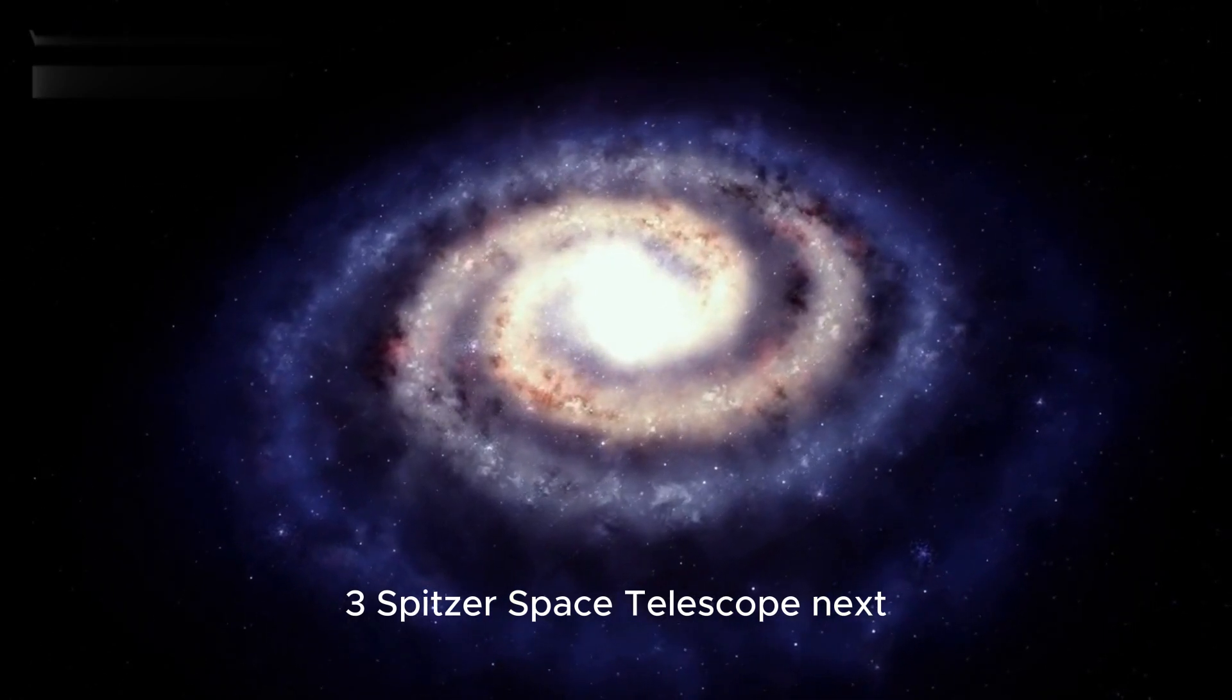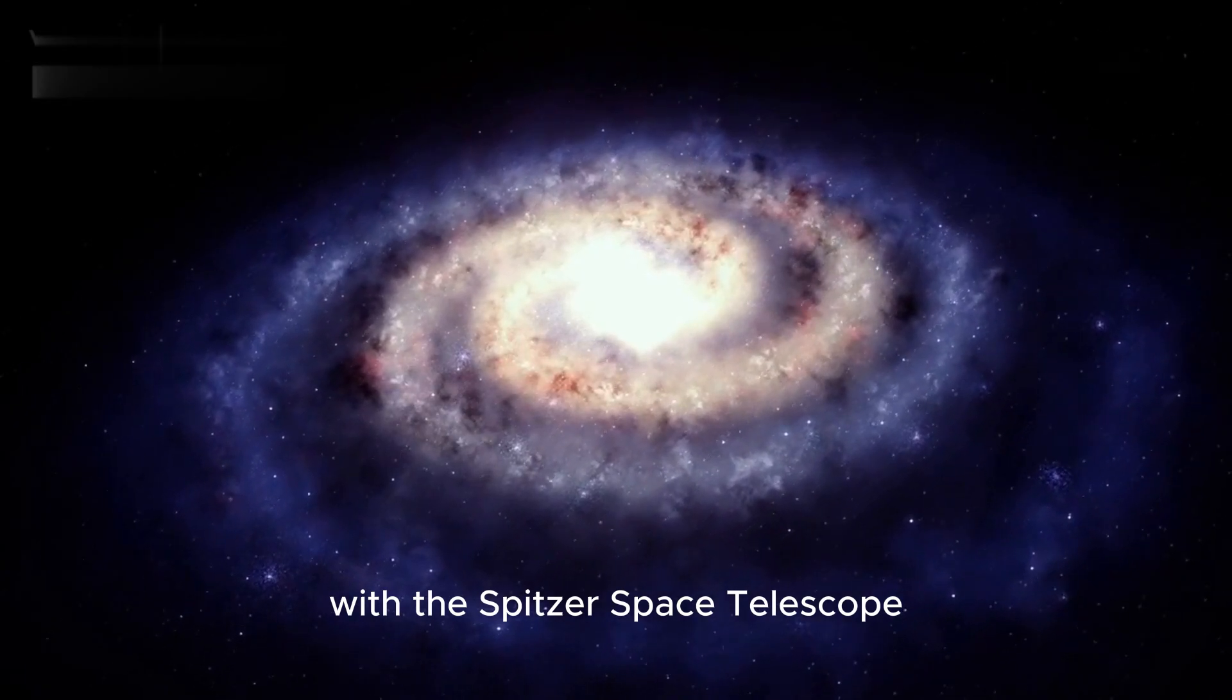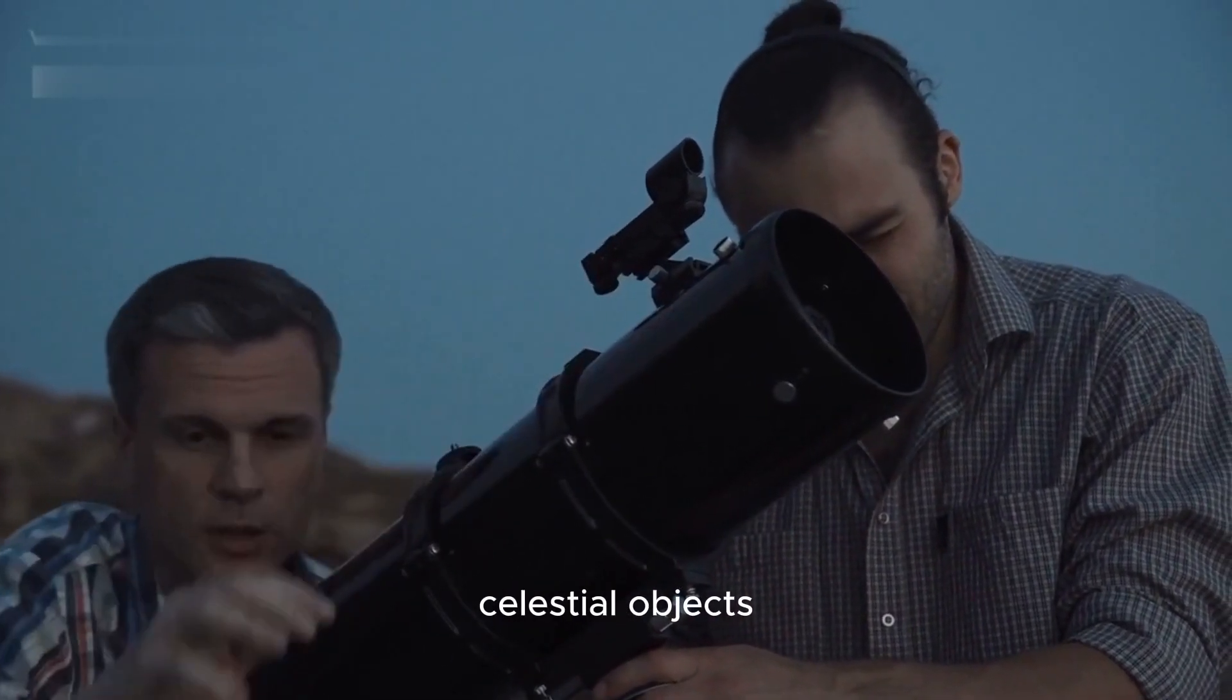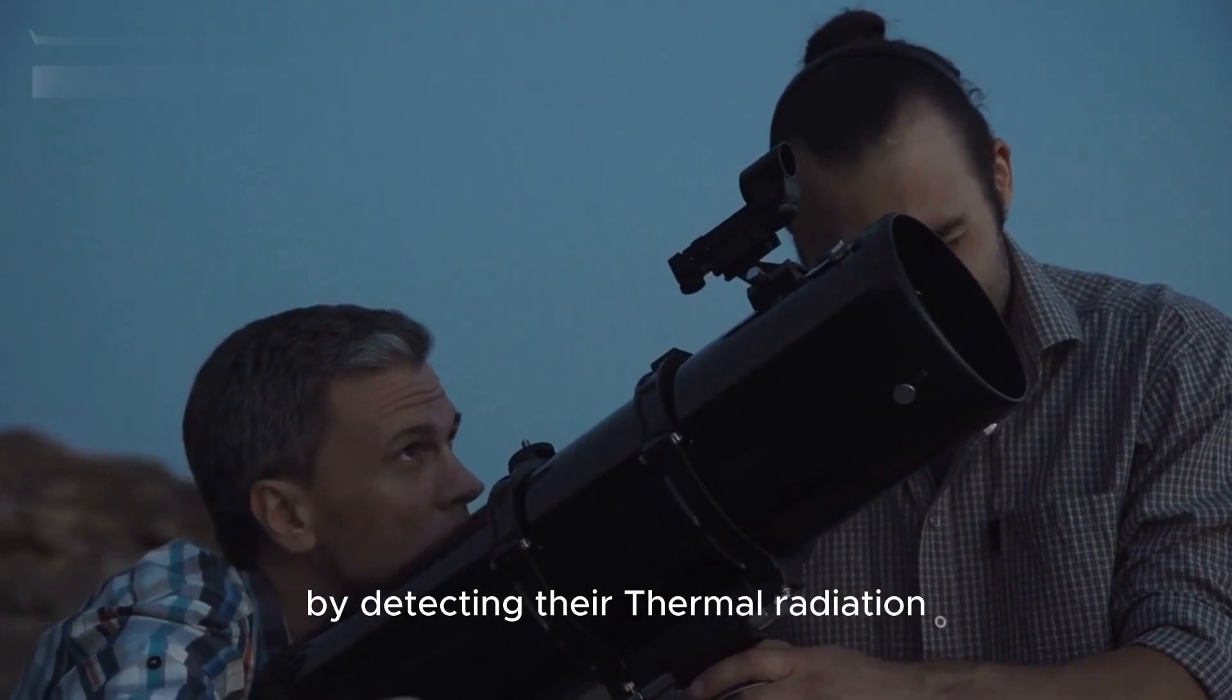Spitzer Space Telescope. Next, we venture into the infrared universe with the Spitzer Space Telescope. We uncover how this telescope has unveiled hidden celestial objects, such as dust clouds, star-forming regions, and exoplanets, by detecting their thermal radiation.